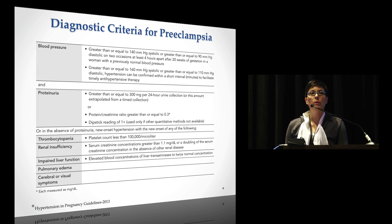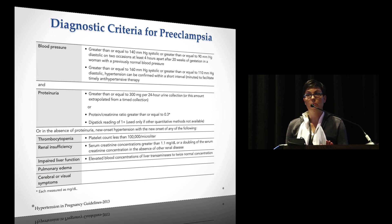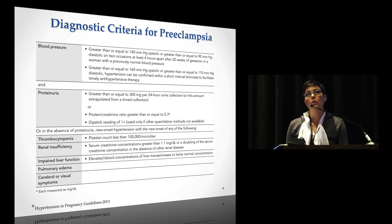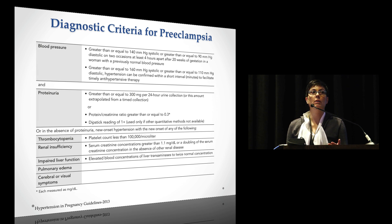They're now using either the 24-hour urine collection for 300 milligrams, and they've eliminated the 5 grams as part of the criteria for severe disease. They've also put in the protein-creatinine ratio. The dipstick reading is qualified in the executive summary — use it only if you don't have access to the protein-creatinine ratio or can't do a 24-hour urine protein. It's not first-line; it's ancillary for rural settings.